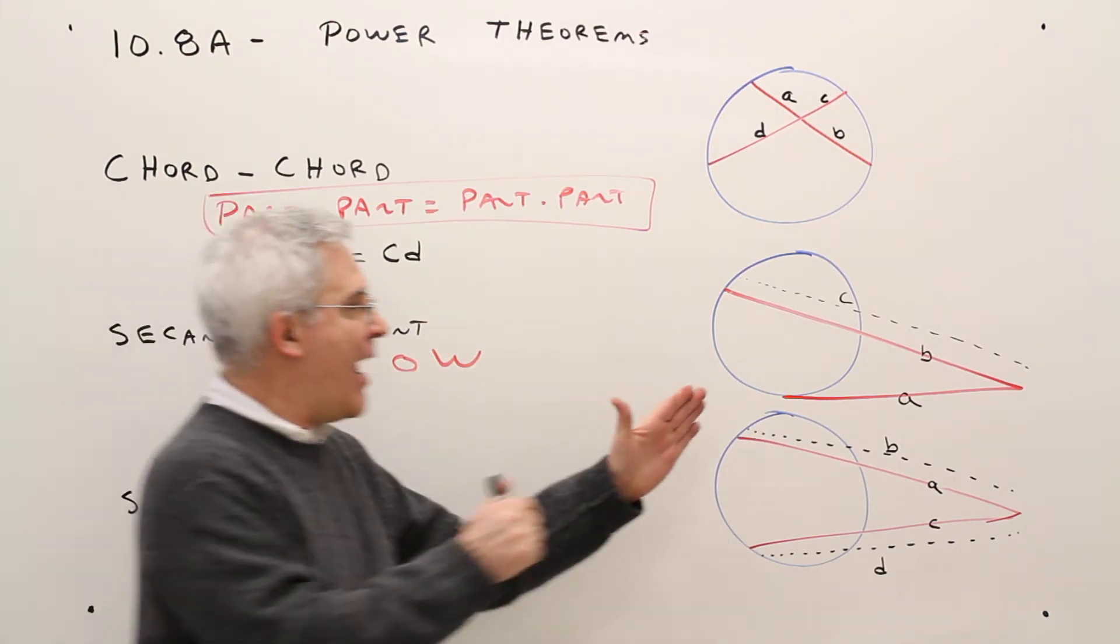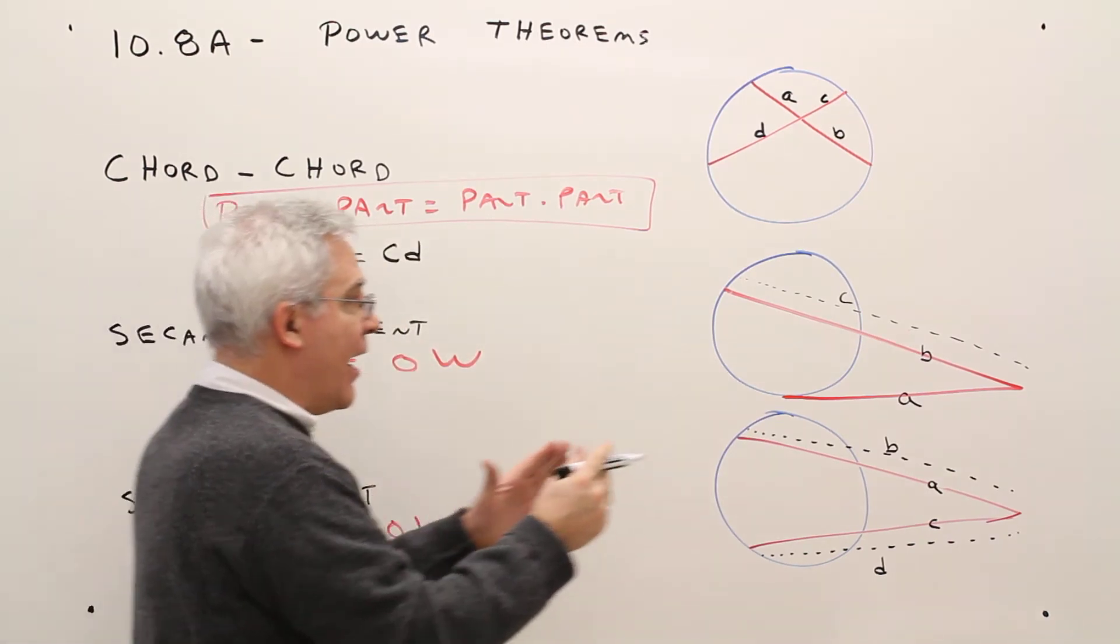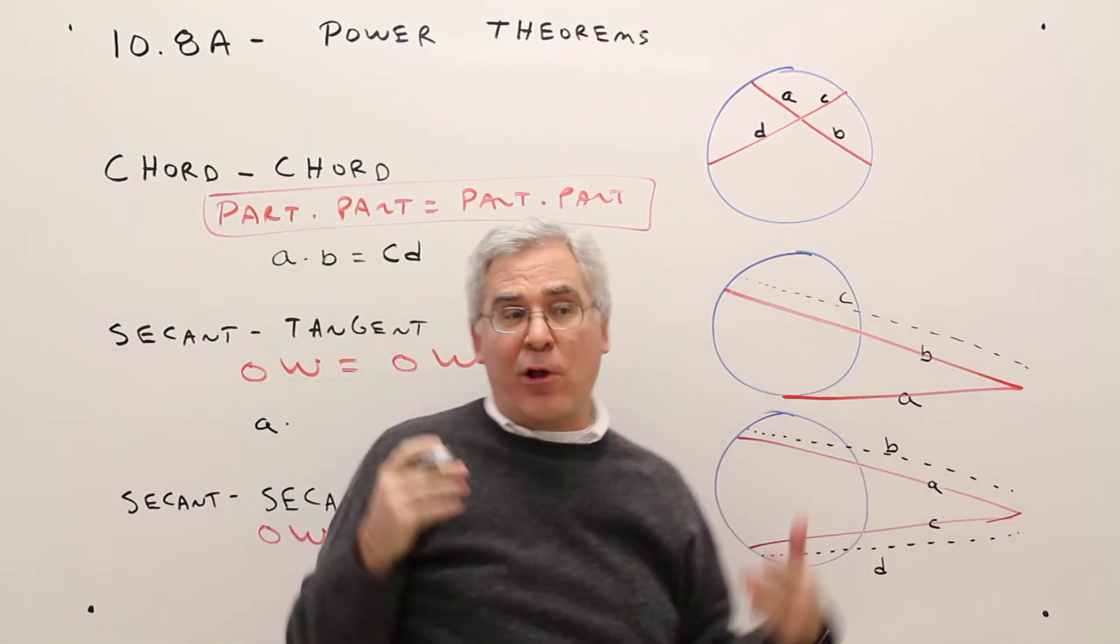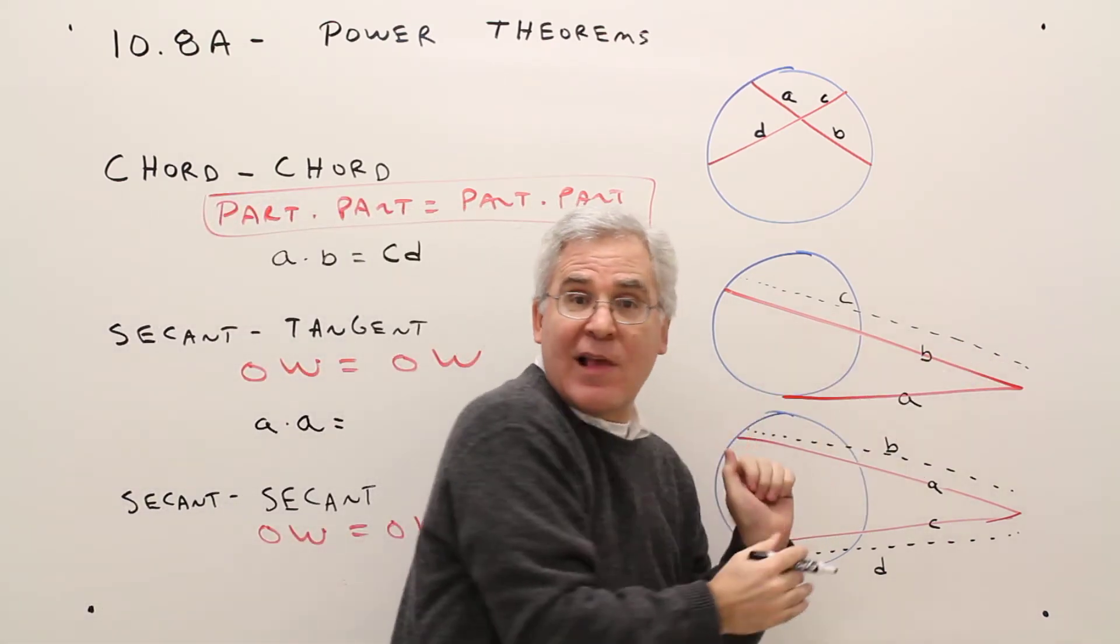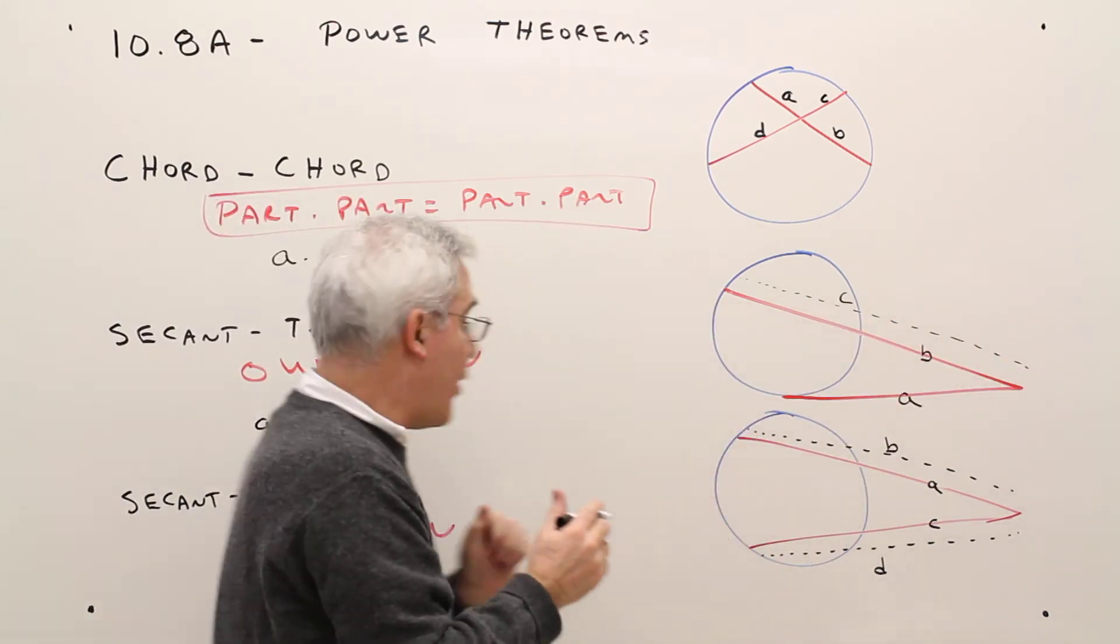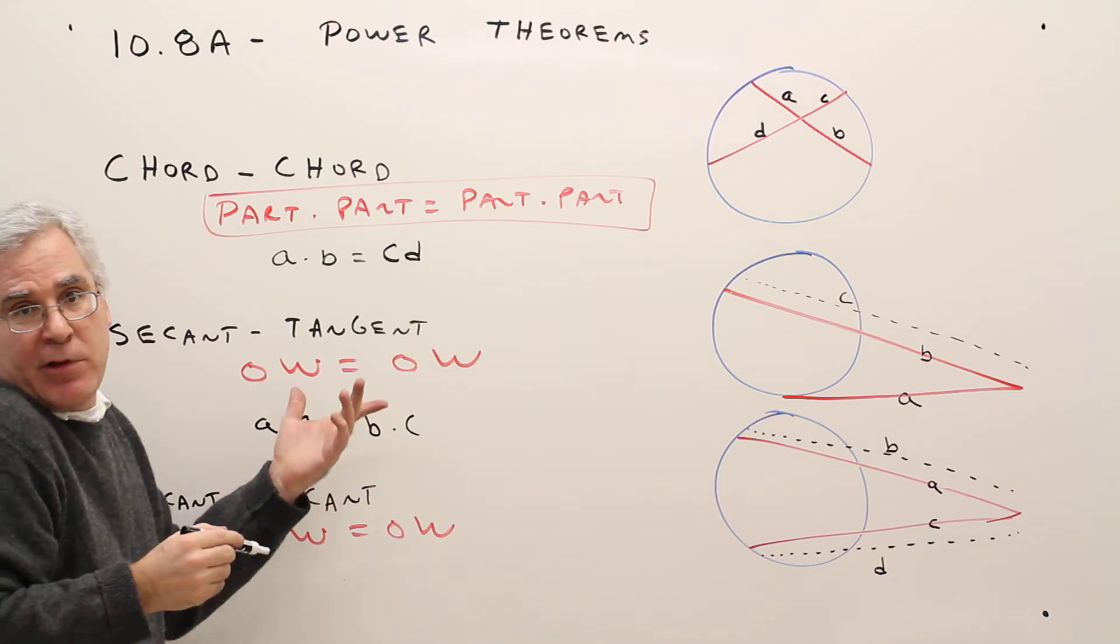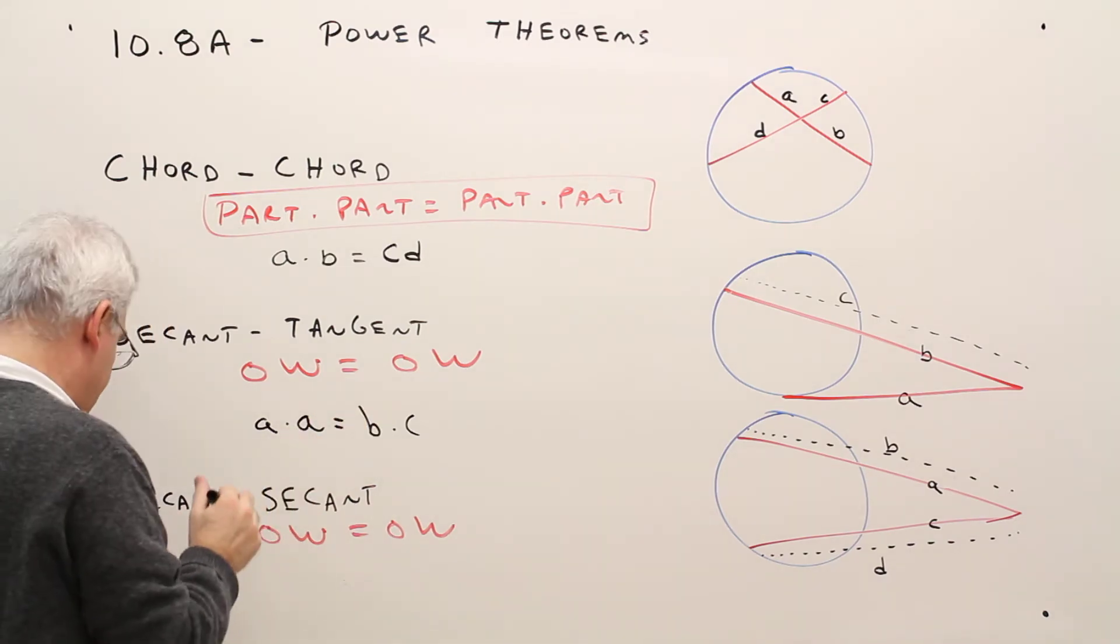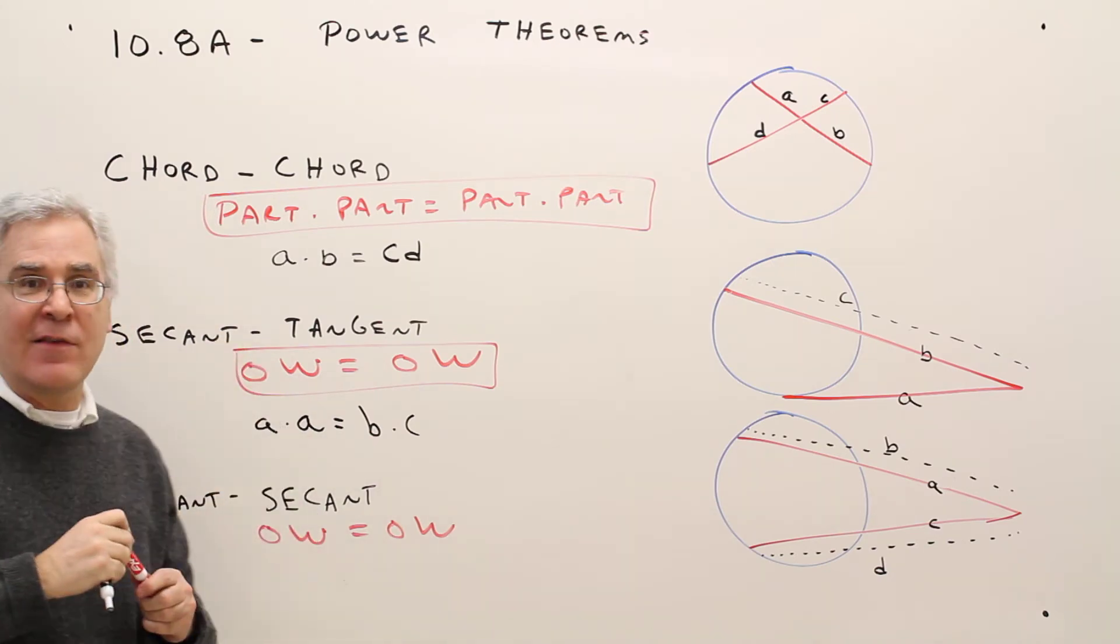Okay, so a is on the outside, and a is also the whole. Okay, so a times a. B is on the outside, and c is the whole segment. You could simplify that to a squared, but I'll just leave it as a times a. So again, ow times ow is easy for me to remember.